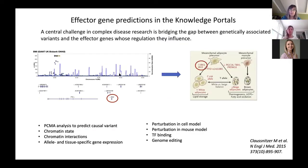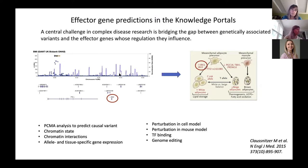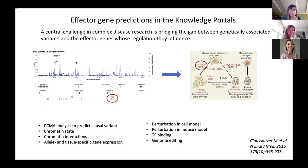As Noelle mentioned, a central challenge in complex disease research is going from variant to mechanism. I wanted to start with a beautiful example of how this was done by Melina Klausnitzer and colleagues. There are many variants within the FTO gene that are very significantly associated with BMI and with diabetes. She and her colleagues first identified which gene these variants were affecting — it turns out not to be FTO, even though they're in FTO. It turns out to be the IRX3 gene and another one even farther away, IRX5.